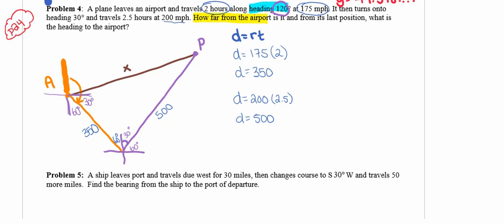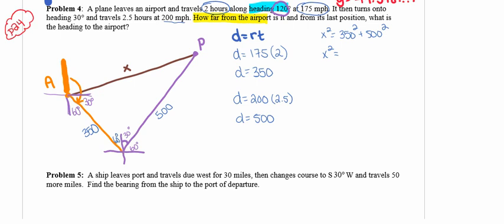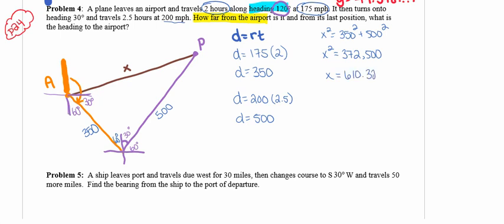This is helpful because now I can use the Pythagorean theorem to find x. So a squared plus b squared equals c squared, or x squared equals 350 squared plus 500 squared. I'm going to grind this out on my calculator — you should too. x squared is 372,500. When I take the square root of both sides, x, the distance the plane is from the airport, is about 610.33 miles, which I'll round to about 610 miles.